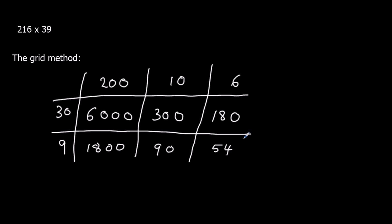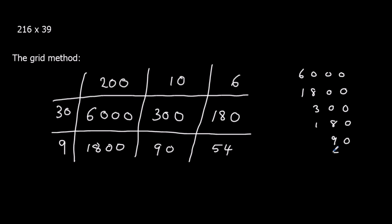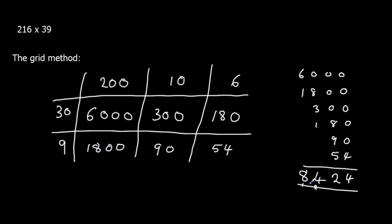So we've done all the separate multiplications. Now we have to add up all these numbers. I'm going to write them in order from largest to smallest: 6,000; 1,800; 300; 180; 90; and 54. Adding down from the right: only 4 in that column; 8 plus 9 plus 5 is 22, write 2 carry 2; 8 plus 3 plus 1 plus 2 is 14, write 4 carry 1; 6 plus 1 plus 1 is 8. So 8,424.